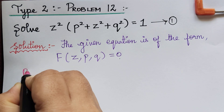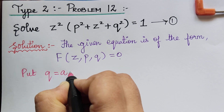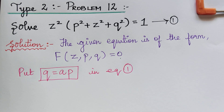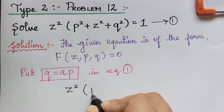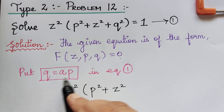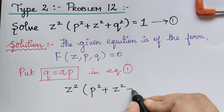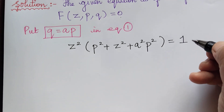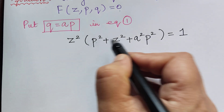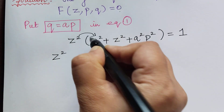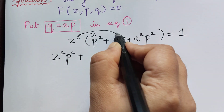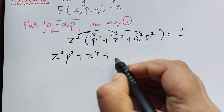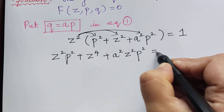For such an equation, we have to make a substitution of q equal to ap. So put q equal to ap in equation 1. When we do so, we get z squared multiplied with p squared plus z squared, and q becomes ap, so q squared becomes a squared p squared, and that is equal to 1.